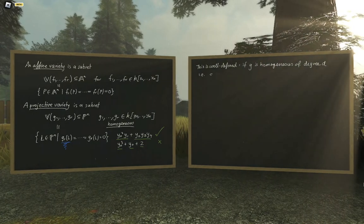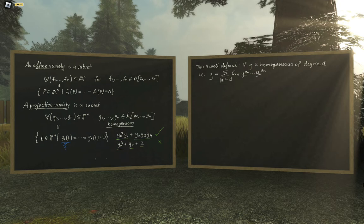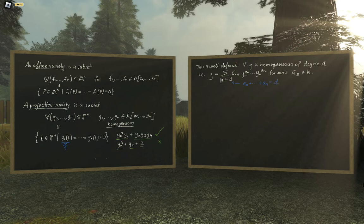There are coefficients G_a in K such that G can be written as a sum of monomials with total degree d, meaning a0 + ... + an = d. If G is homogeneous and we're given two points P and P-prime belonging to the same line L in PN, say P = (b0, ..., bn) and P-prime = (b0', ..., bn'), with bi = lambda·bi-prime.